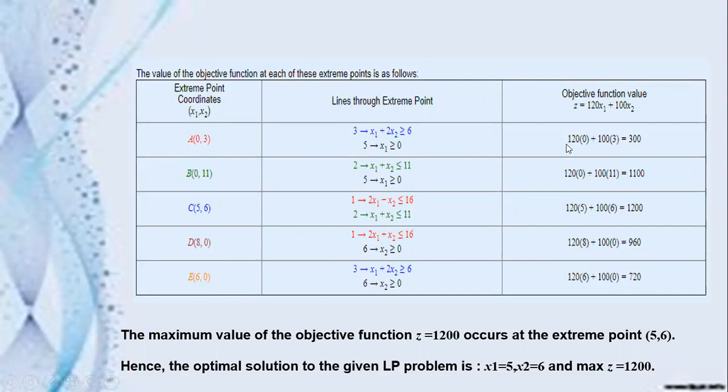Substitute in the z equation, that is the objective function equation, and get the z value. The problem is a maximization problem. Out of these values, whichever is the maximum you select. Here, 1200 is the highest value, occurring at point C for the coordinates (5,6). So x1 equals 5, x2 equals 6, and z equals 1200.